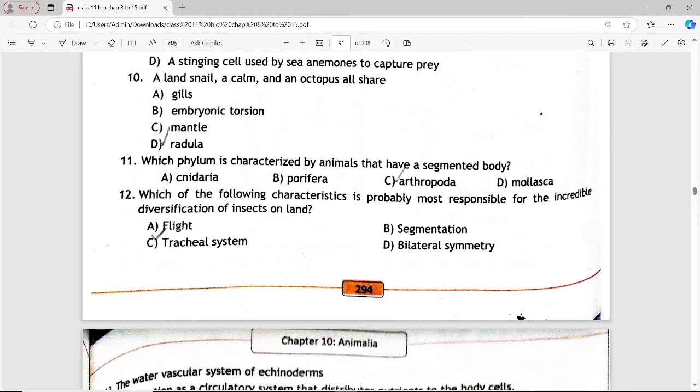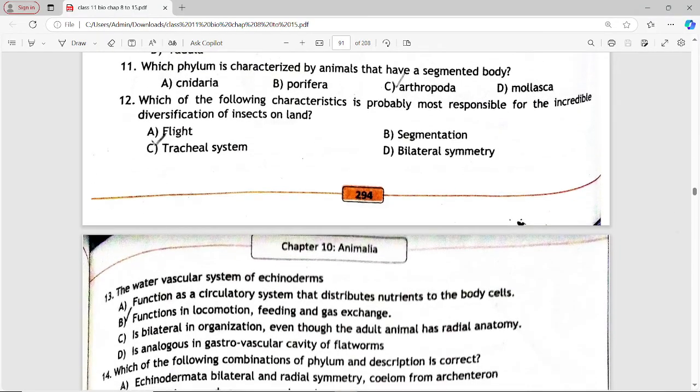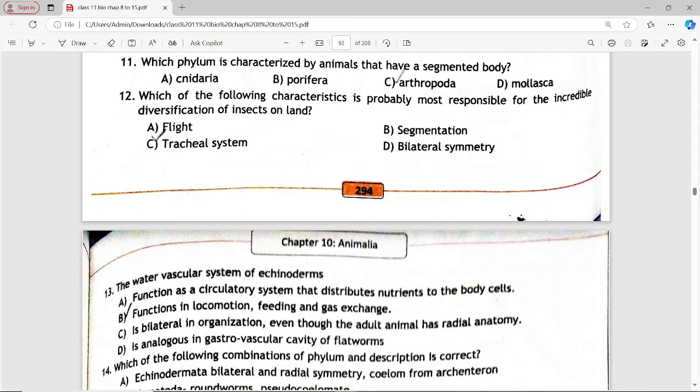Next is: which phylum is characterized by animals that have a segmented body? Options are Cnidaria, Porifera, Arthropoda, Mollusca. Answer is option C, Arthropoda.